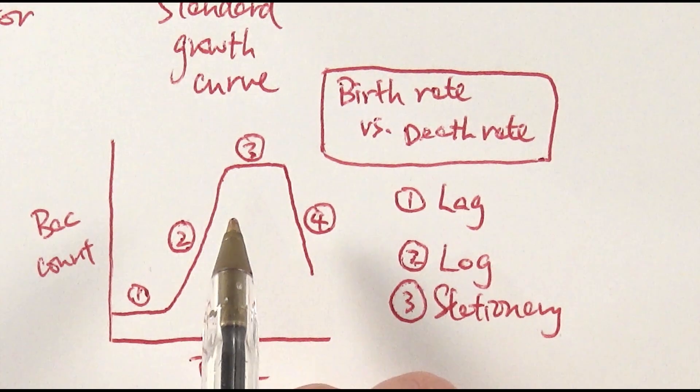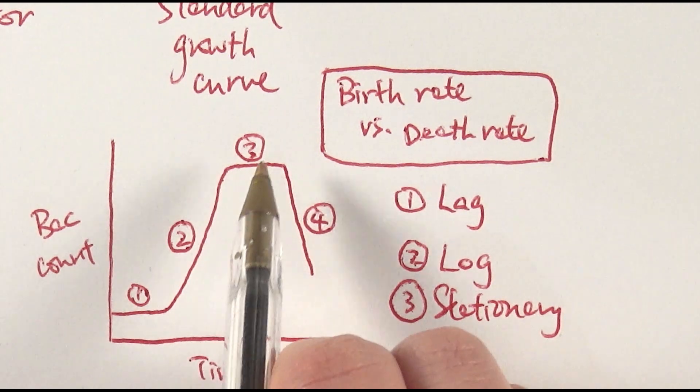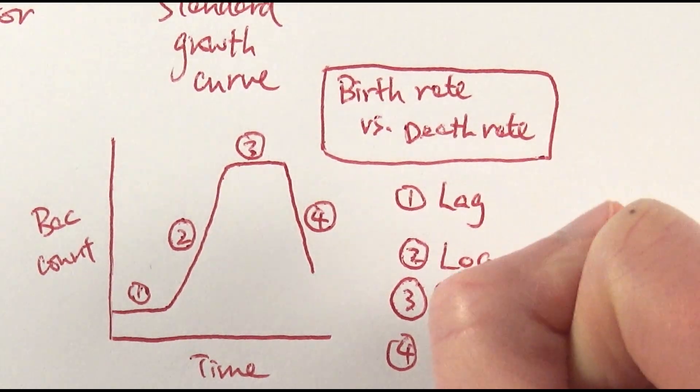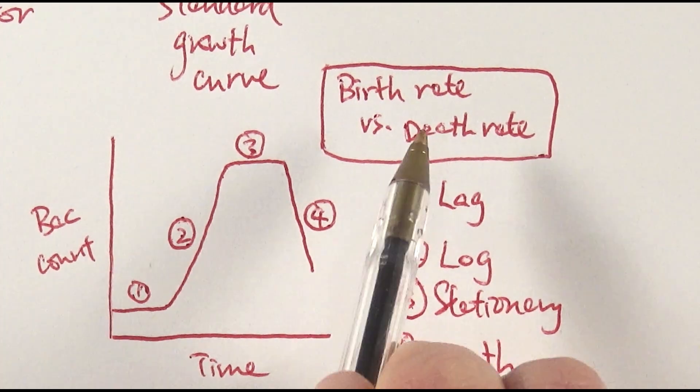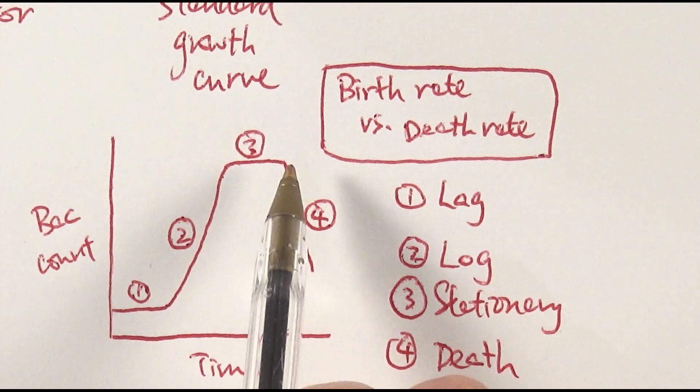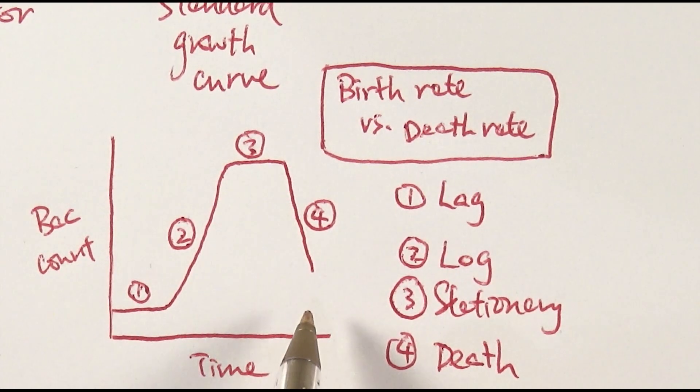The third stage is called the stationary phase. It's starting to have a bit of competition, so the birth rate and death rate is pretty much equal at that stage. A bit of fluctuations but pretty much the same. And finally, this is called the death phase where death rate is much higher than birth rate because there's lots more competition. Nutrients start to become way more limiting. Toxic waste built up in the tank, therefore leading to death.